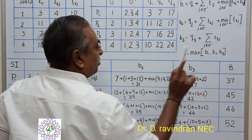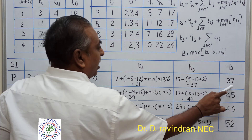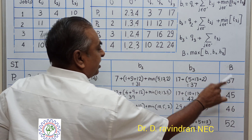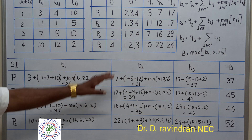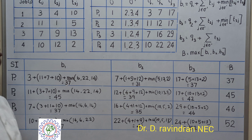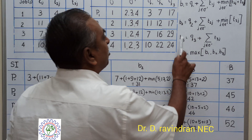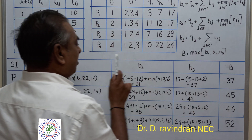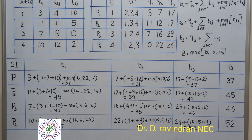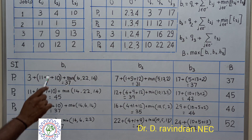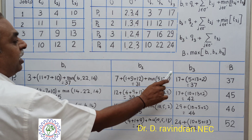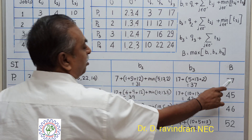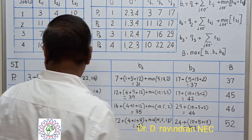The upper bound B for a node is the maximum of B1, B2, and B3. We choose the maximum value and use it as the lower bound for that partial sequence. Now let us apply this formula for the first stage by finding B1, B2, B3, and the maximum value B.